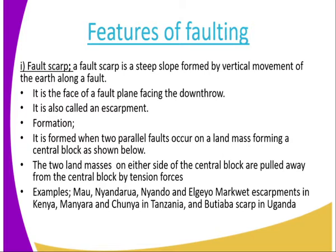How is it formed? It is formed when two parallel faults occur on a landmass forming a central block, as shown in the diagram below. The two landmasses on either side of the central block are pulled away from the central block by the tension force. So that is when the steep slope facing the down-throw is formed. Examples include the Mau, Nyandarua, Nyando, and Elgeyo escarpments, all found in Kenya in the Gregory Rift Valley.